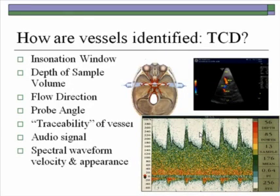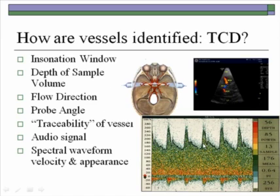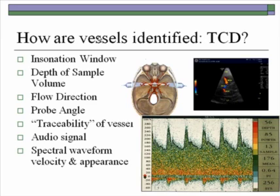How are vessels identified with transcranial Doppler? Several parameters are used: the insonation window — temporal, orbital, or suboccipital — the sample volume depth, the flow direction, and the probe angle. Angling completely straight on captures the anterior circulation; angling posteriorly, laterally, and slightly inferiorly picks up the posterior cerebral arteries and the top of the basilar. The middle cerebral artery is the longest and straightest vessel so it is the most traceable. The audio signal also gives very helpful information and can help you optimize the waveform just by using your ears.